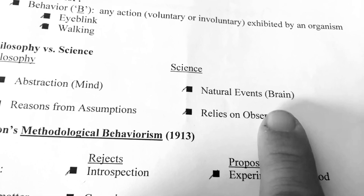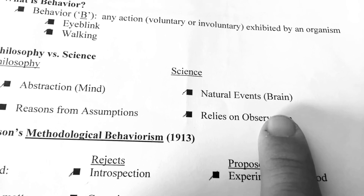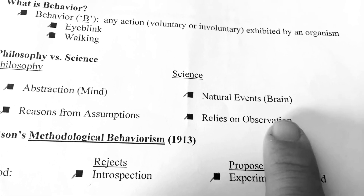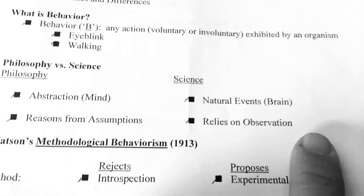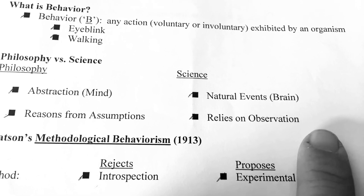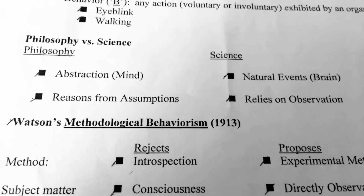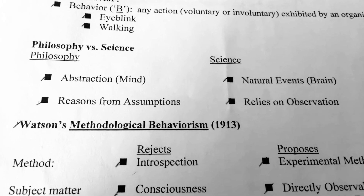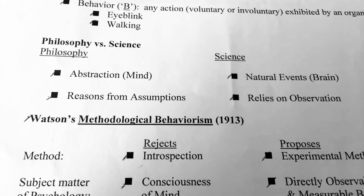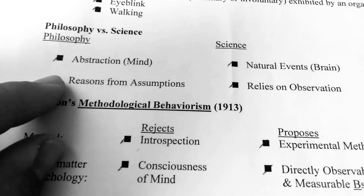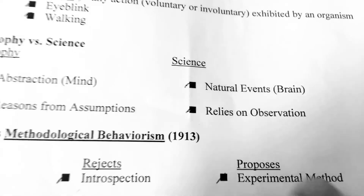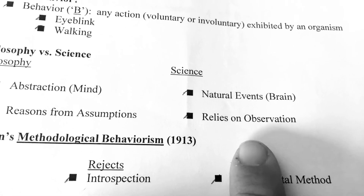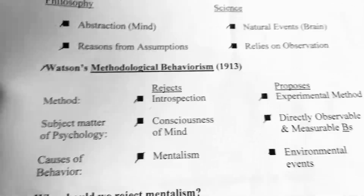Brain activity is much easier to measure. You could use tools to measure sleep patterns and use different scientific tools to measure what activity is going on in the brain. It would also be the rejection of assumption, which is not as accurate. Instead, in science, we rely on observational data points.